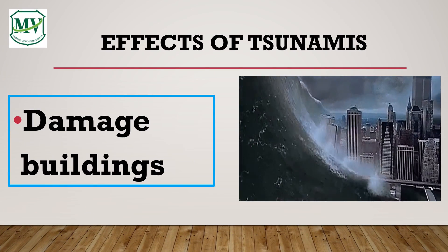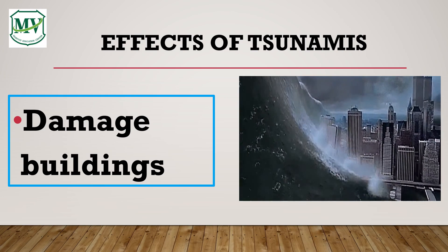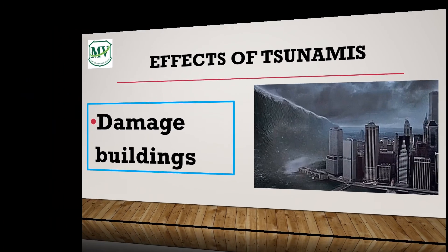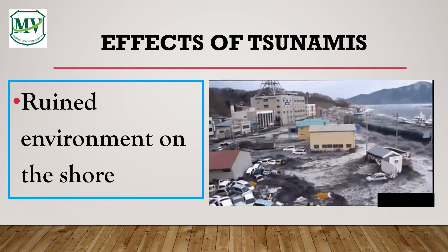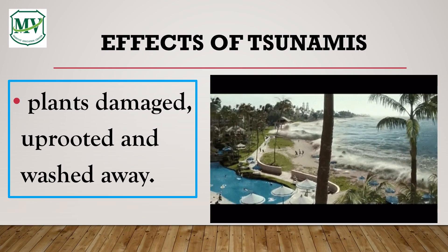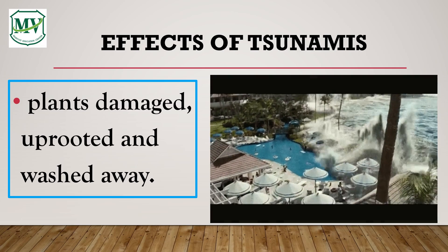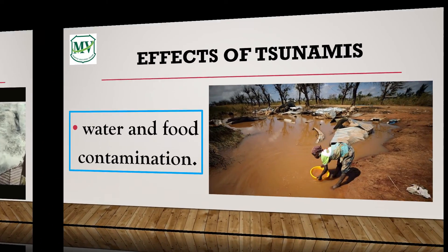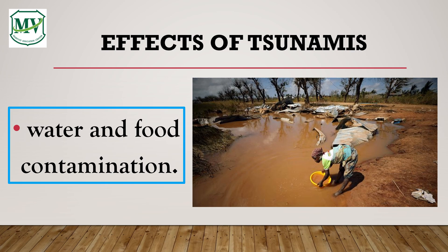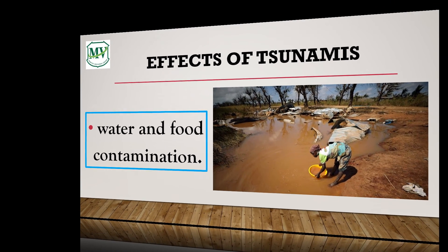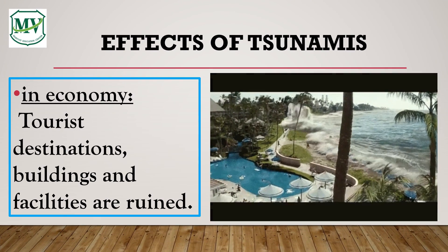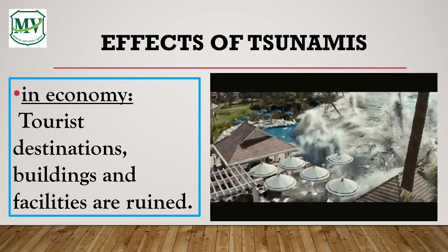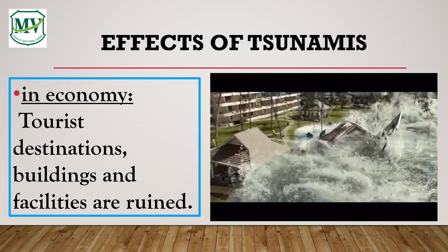Let's learn what are the effects of tsunamis. Because of tsunamis, it can damage buildings, ruin the environment on the shore, and damage plants by uprooting and washing them away. It can also cause water and food contamination, the spread of infectious disease like cholera, and it will affect economic income because of ruined tourist destinations, buildings, and facilities.